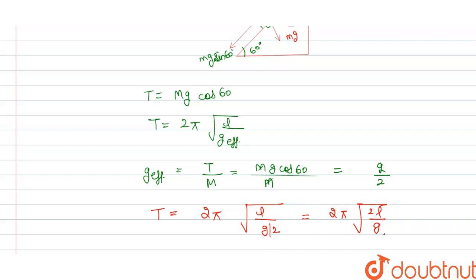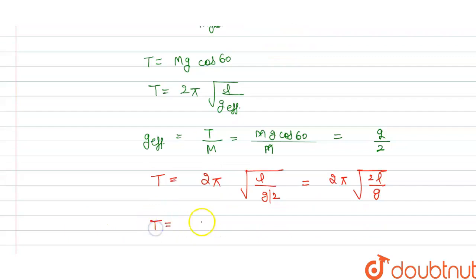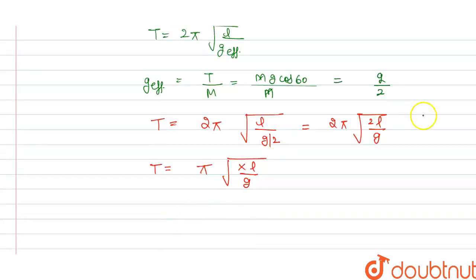We have the given time period as π√(xl/g). By comparing these two equations, let's call them equation 1 and equation 2.